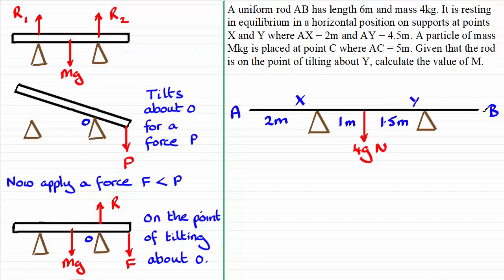And we're told it rests on two supports, one at X, one at Y. And we're told that AX is two metres and AY is four point five metres. So you can see that we've got the two metres, one metre and one point five metres, giving us the four point five metres.